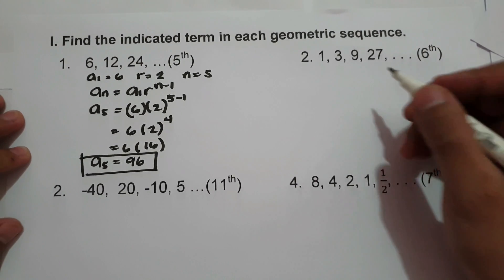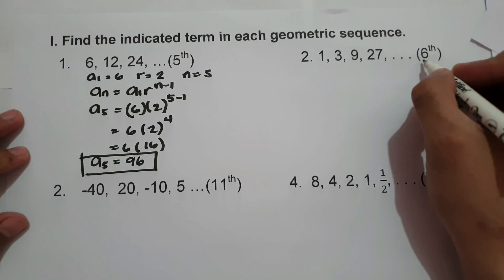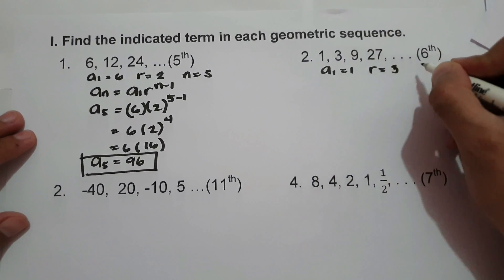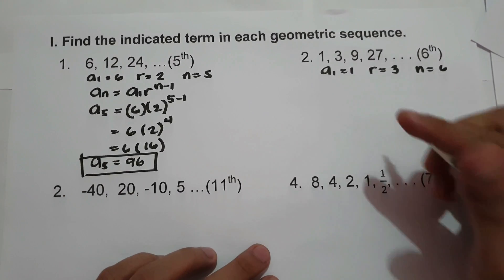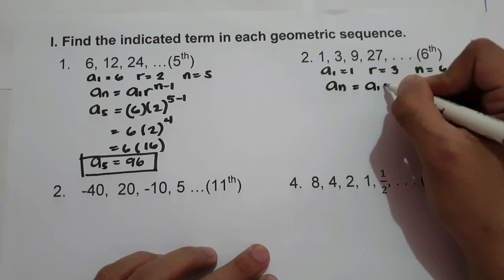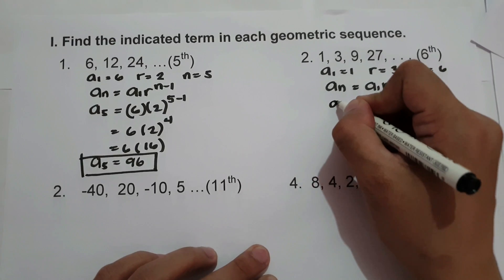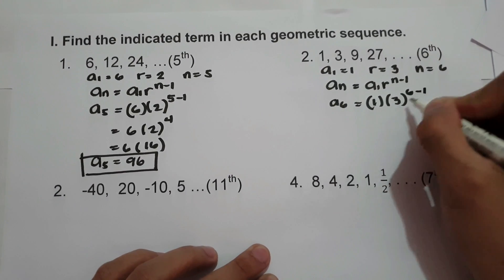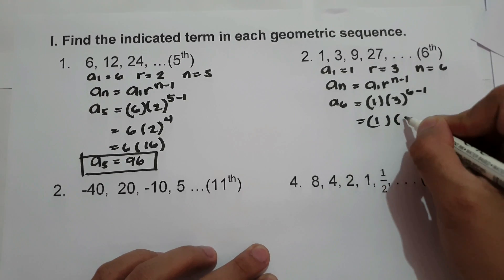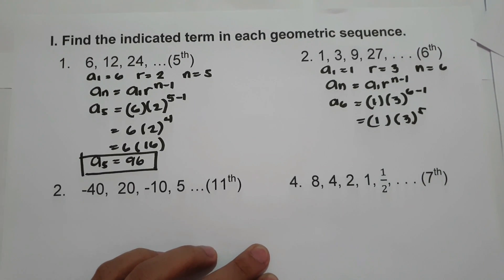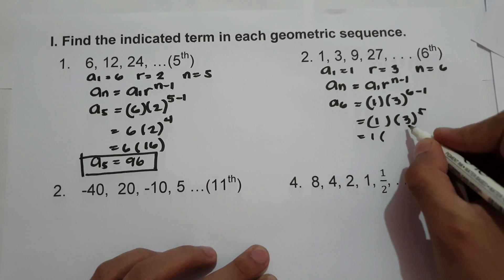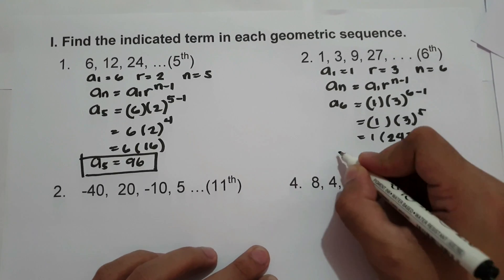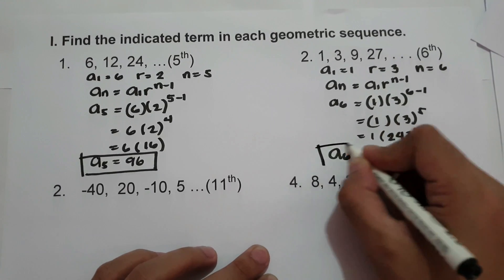What about number 2? We have the sequence 1, 3, 9, 27, and we are looking for the 6th term. So a sub 1 is 1, the ratio is 3 divided by 1 which is 3, and n is 6. Using the formula, a sub 6 equals 1 times 3 raised to 6 minus 1, which is 1 times 3 raised to 5. We multiply 3 by itself 5 times: that is 243 times 1. So the 6th term is 243.